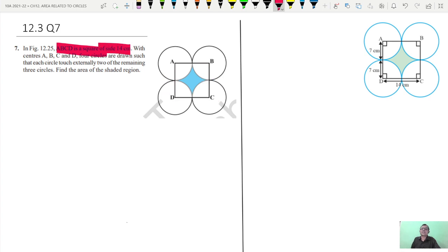Of side 14 centimeter, as given here, this is 14 centimeter. So that the circles are external, circle touch externally two of the remaining three circles.